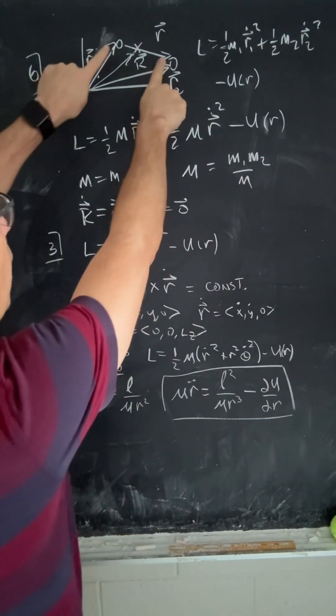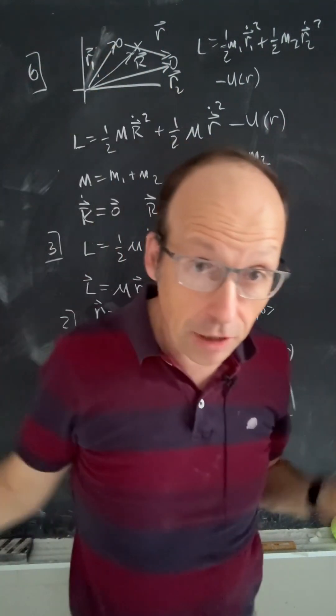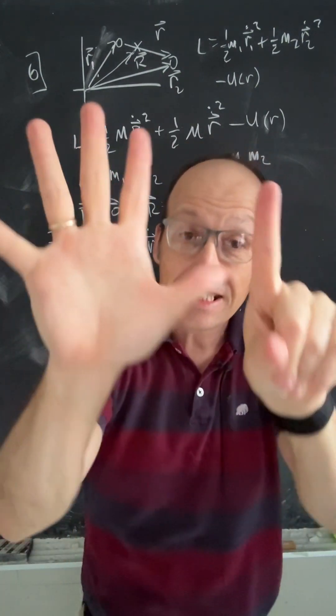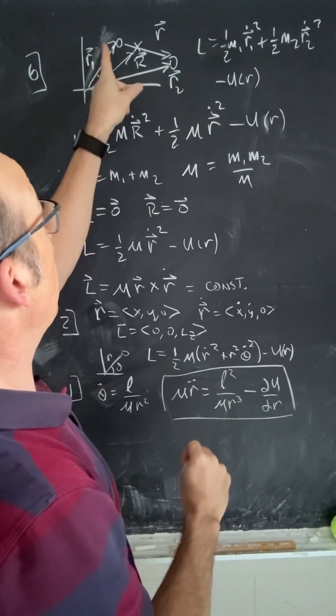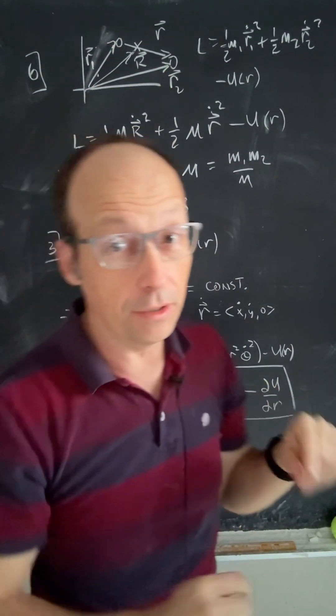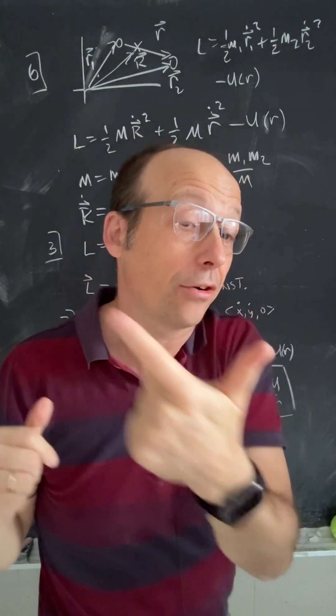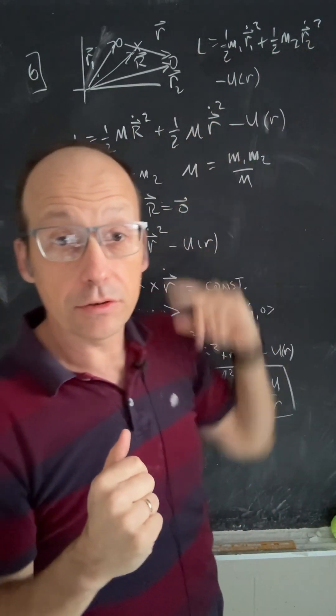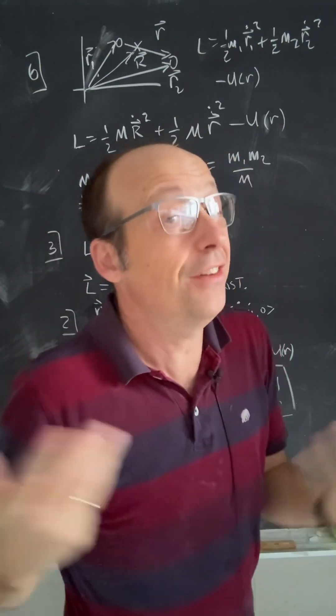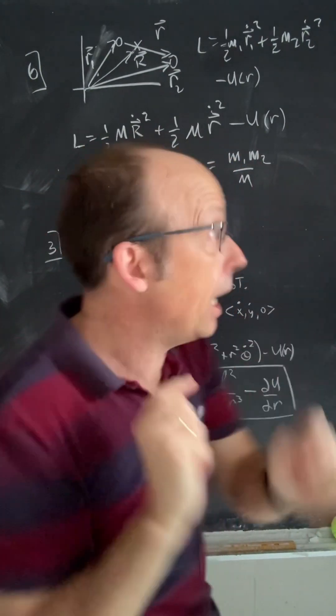So we start with two objects right here in three-dimensional space that has six degrees of freedom. Three Cartesian coordinates, three Cartesian coordinates. We call those positions R1 and R2, and we can write the Lagrangian in terms of those, and you get six degrees of freedom, so you have six Lagrangian equations. No one wants to do that.